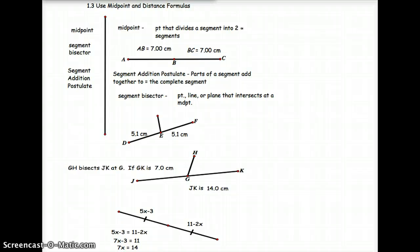The midpoint is a point that divides the segment into two segments. So it divides one long segment, as in AC here, and then B is the midpoint and divides it into two segments, AB and BC. So that's what a midpoint is. Pretty self-explanatory, I think we all are pretty familiar with that.